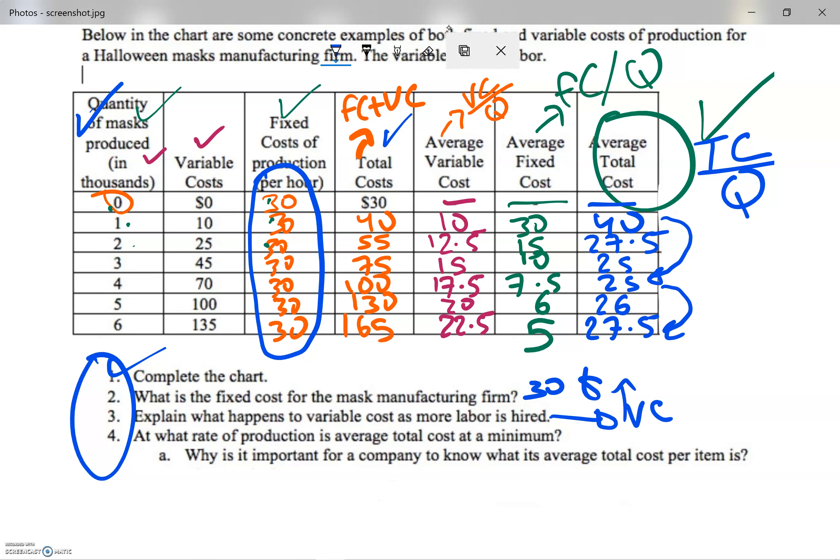Question number four: At what rate of production is average total cost at the minimum? It's at unit three and unit four, so here.